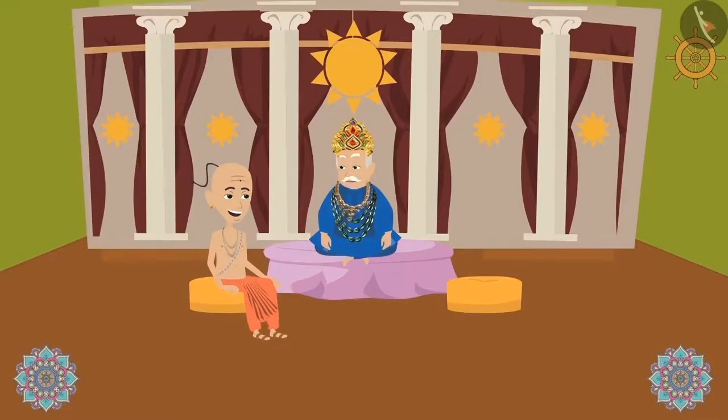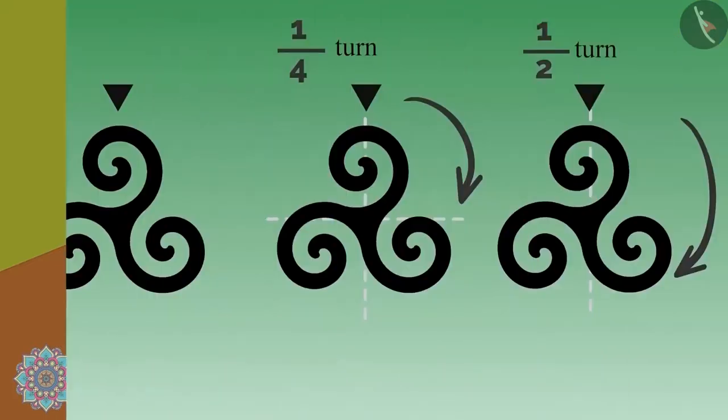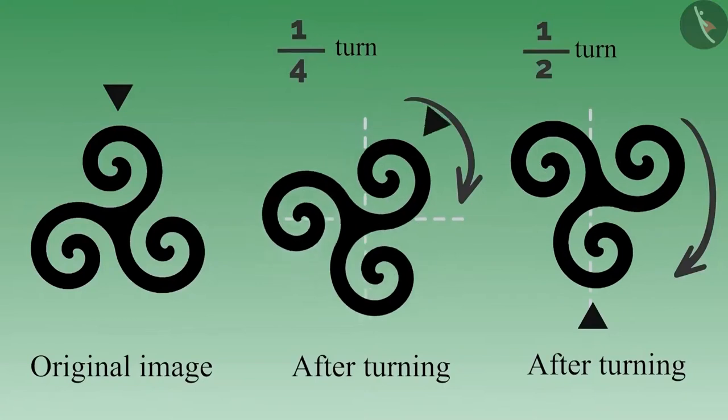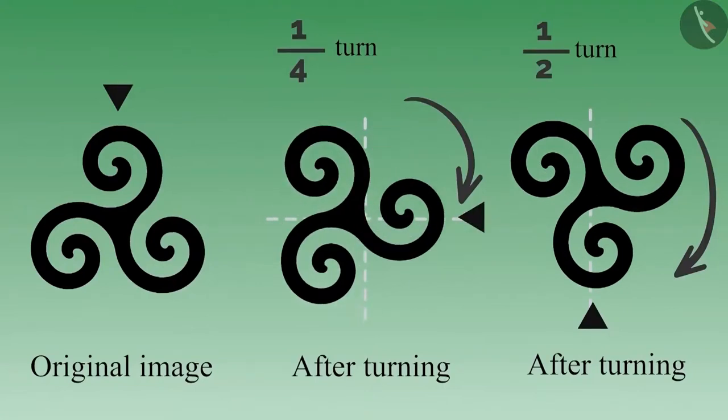Why is it so, Tenali Ramaji? Your Highness, it means that we cannot use half or one-fourth rotational symmetry with this image.